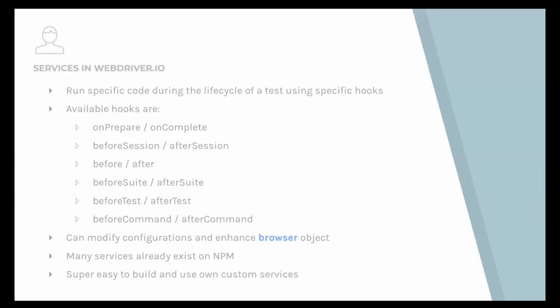Services essentially allow you to introspect the lifecycle of a test and create hooks for specific lifecycle events — like before a session starts, before a test starts, before a suite starts, or before a command starts — and do asynchronous operations on top of it. This allows us to start servers or start a MySQL database whenever we need to. It's a nice way to encapsulate configuration complexity out of the config file, making it plug-and-play. Many services already exist on NPM, but you can also create your own custom services.